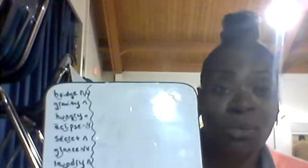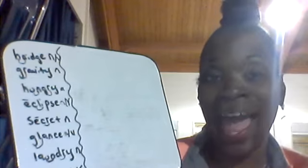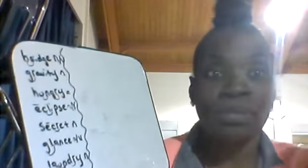Anytime we come across our spelling words and we're trying to remember how to spell them, we look for major keys for decoding. We look for blends and long and short vowels. Bridge: B-R, short I, D-G-E. Gravity: G-R, short A, V-I, short I, T. Remember, whenever Y is at the end of a multi-syllable word, it makes the E sound. If it's one syllable, Y will sound like I.